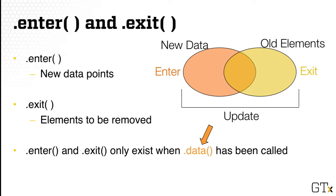As a recap, the Enter phase is where you will see new data points. And for Exit, it's where elements that will be removed can be manipulated. Also, Enter and Exit will only exist when data has been called. For the Update phase, you get everything. Everything that you've seen, everything that you will remove, and so on.